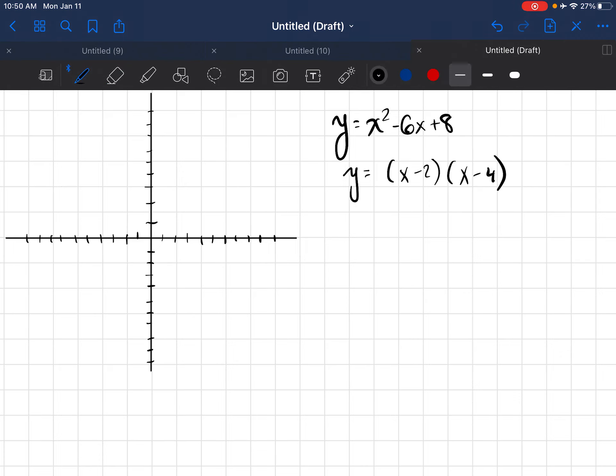Now using the zero product property tells me that I am going to substitute zero for y and then I'm going to solve each of these independently. So x minus 2 equals 0, x minus 4 equals 0. And so my x-intercepts, once I solve these, are x equals 2 and x equals 4.